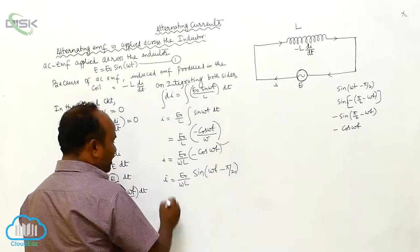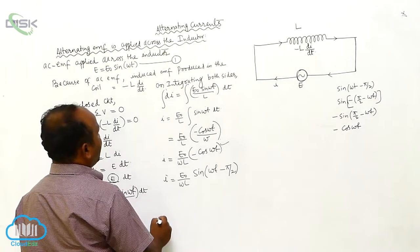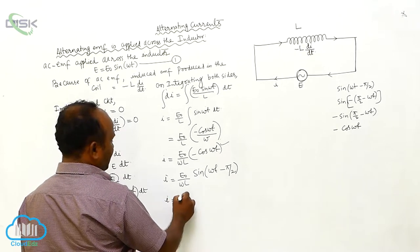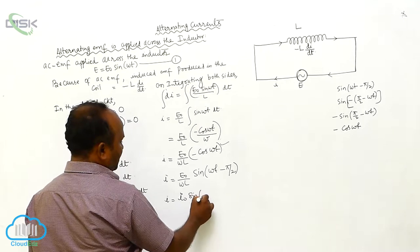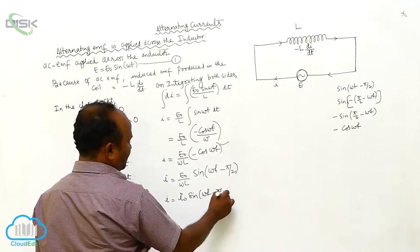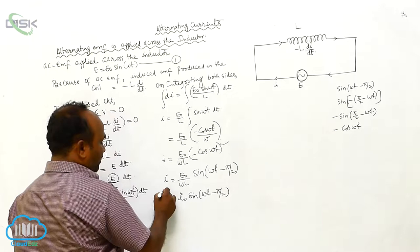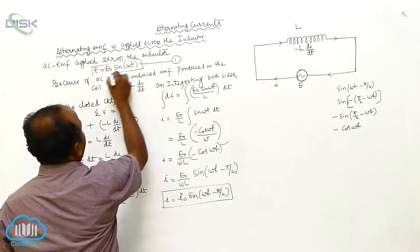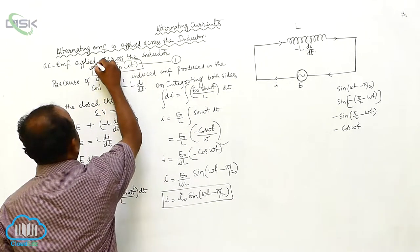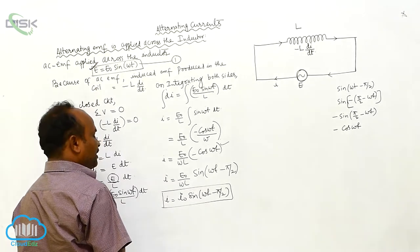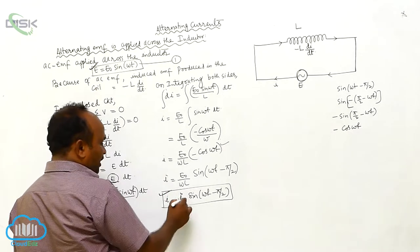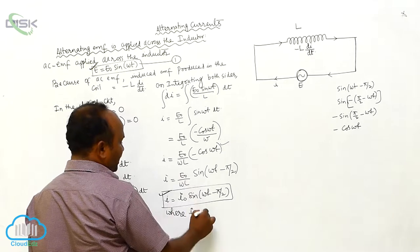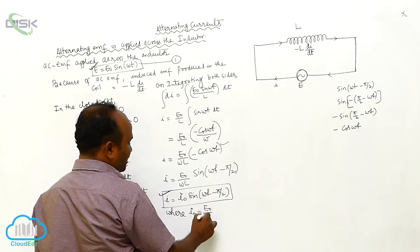On comparing, I equals I₀ sin(ωt − π/2). This is the current expression. Where I₀ equals E₀/(ωL) — that is, maximum current equals maximum EMF divided by ωL. Here ω is the angular frequency and L is the inductance or self-inductance.